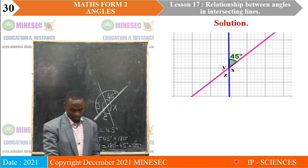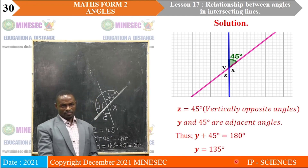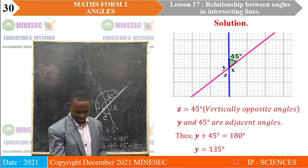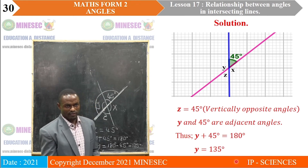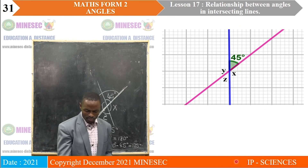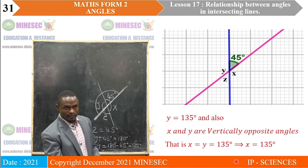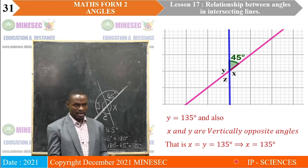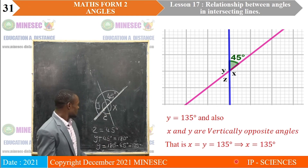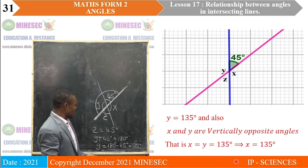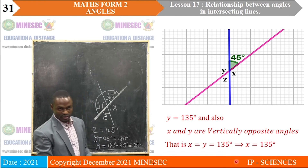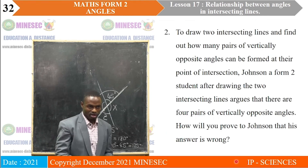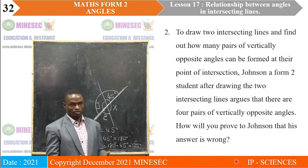Z is 45 degrees — vertically opposite angles. Y and 45 are adjacent angles. Looking at X and Y, they are vertically opposite angles. We have already obtained Y as 135 degrees, which means X is equal to Y and should also be 135 degrees.